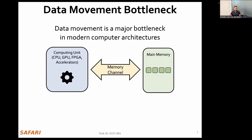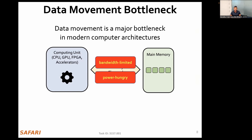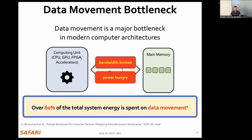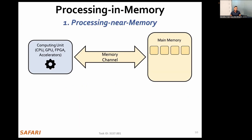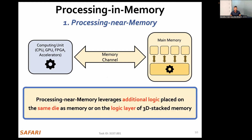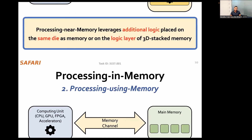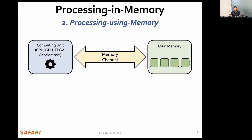Data movement is a major bottleneck in modern systems. This is due to the bandwidth-limited and power-hungry nature of the memory channel that connects main memory to the computing units of conventional systems. In fact, recent works have shown that the majority of the system's energy is consumed by data movement. To address the data movement bottleneck, prior works have proposed processing-using-memory architectures, where computation is done by adding extra logic near memory devices. In this work, we focus on a subset of processing-using-memory solutions that uses DRAM for computation, which we call processing using DRAM.